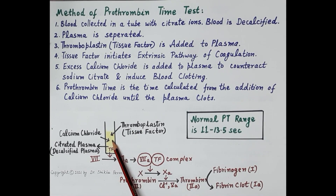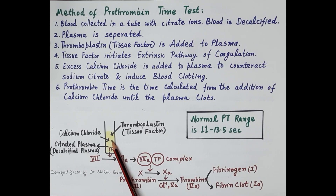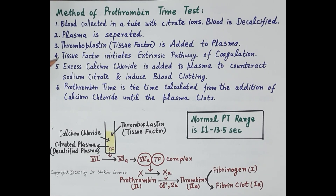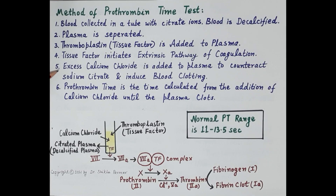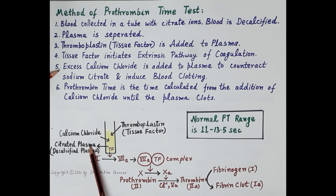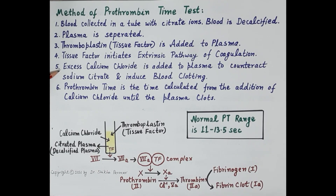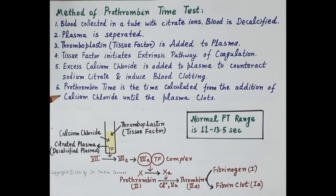Tissue factor initiates the extrinsic pathway of coagulation. Since calcium ions are required for coagulation but the citrated plasma is decalcified, an excess of calcium chloride is added to the plasma. As soon as calcium chloride is added, the extrinsic pathway of coagulation is initiated and the blood starts coagulating. Prothrombin time is the time calculated from the addition of calcium chloride to the formation of the clot.